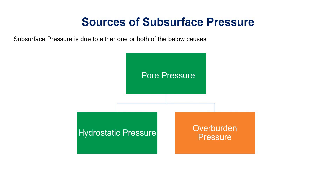As I mentioned earlier, in our previous tutorial while discussing the sources of subsurface pressure, we discussed that formation pressure — also known as subsurface pressure or pore pressure — is due to either one or both of two causes. The first one is hydrostatic pressure and the second one is overburden pressure. In our previous tutorial we saw how hydrostatic pressure acts as a source of pore pressure or formation pressure. Now here we will see the second cause: overburden pressure.